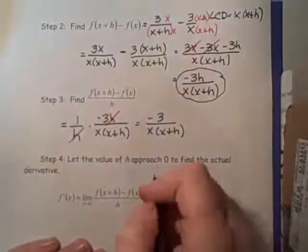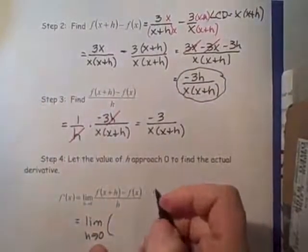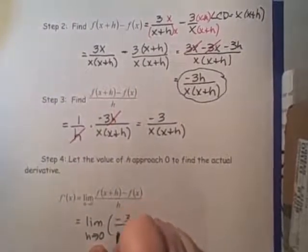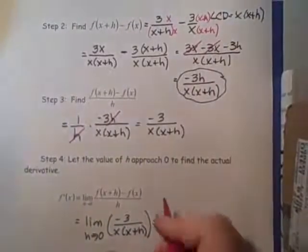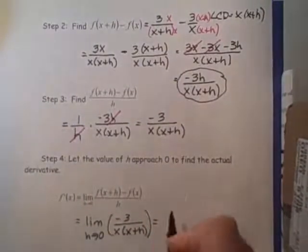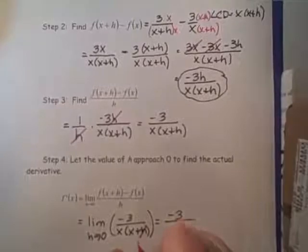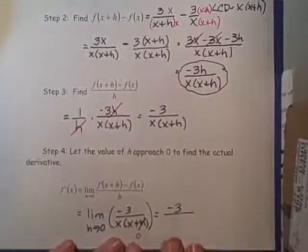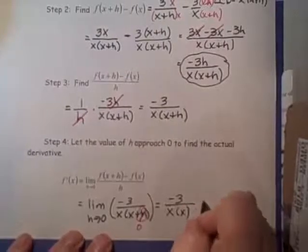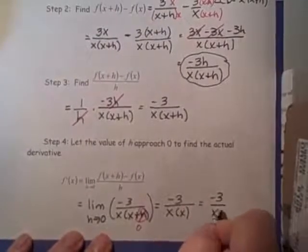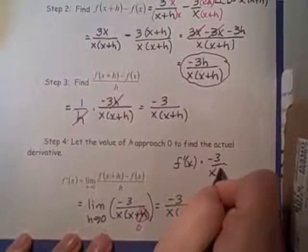Now, in our final step, all we need to do is take that limit as h approaches 0. I have the limit as h approaches 0 of negative 3 over x times x plus h. If I let h go to 0, nothing really happens to the numerator—I still have negative 3. In the denominator, that h is going to tend towards 0, so I end up with x times x. My final answer is negative 3 over x squared. So my derivative is negative 3 over x squared.